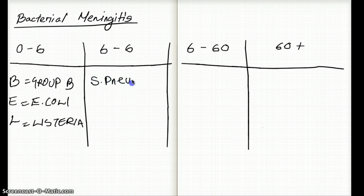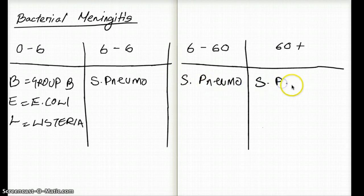This is going to follow throughout, except 0 to 6 months. That's the number one infectious agent that causes meningitis in any age group above 6 months.